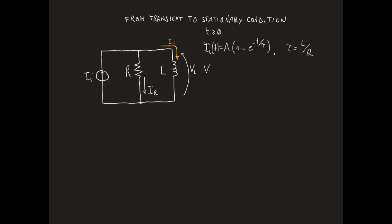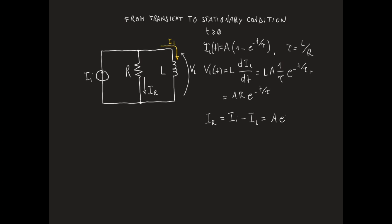We know that VL of t is equal to the inductance times the time derivative of IL, which gives L times A times (1/τ) times e^(-t/τ), or A times R times e^(-t/τ). On the other hand, by Kirchhoff's law for currents, IR is equal to Ii minus IL, which gives A times e^(-t/τ).